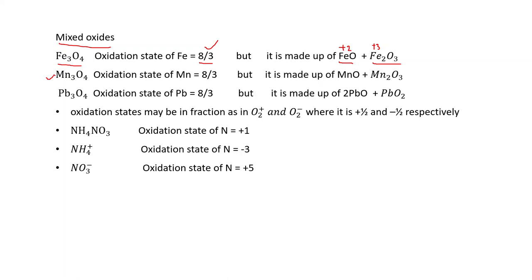Similarly, Mn₃O₄ gives an average oxidation number of manganese of 8/3, but it is composed of MnO (Mn = +2) and Mn₂O₃ (Mn = +3). Likewise, Pb₃O₄ has an average oxidation state of lead of 8/3, but it is made up of 2 units of PbO (Pb = +2) and 1 unit of PbO₂ (Pb = +4).